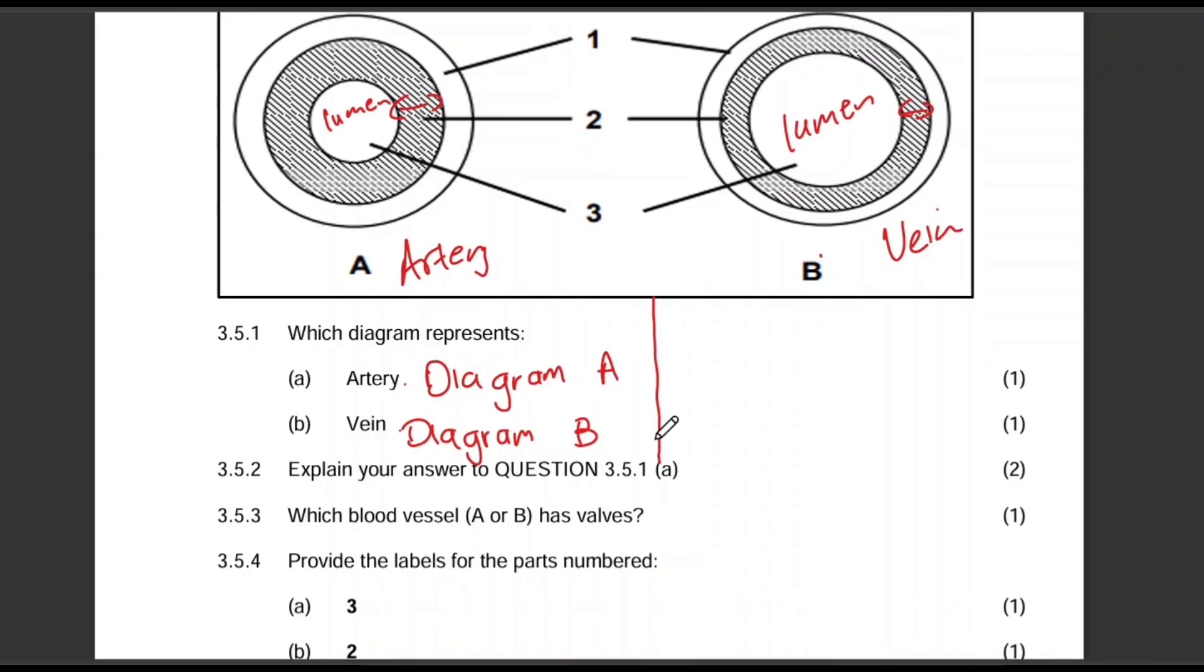Let me write the answer here for how many, two marks. Okay. Let's follow the instruction. Explain your answer to question 3.5.1a. So we are explaining why we are saying diagram A is the artery. We are not necessarily comparing between the two. Yes, you can compare for your understanding, but for how we need to answer, we are just explaining for the artery.